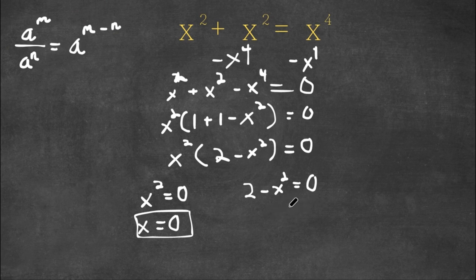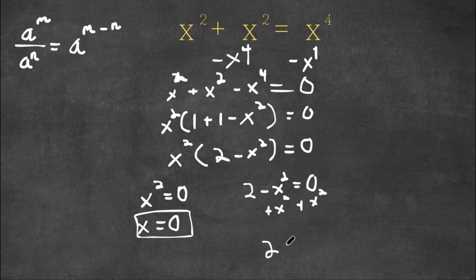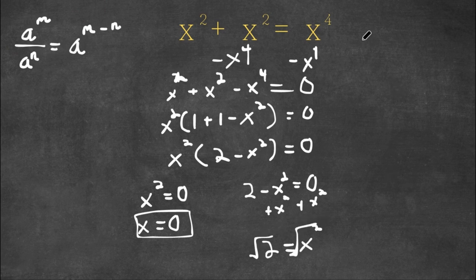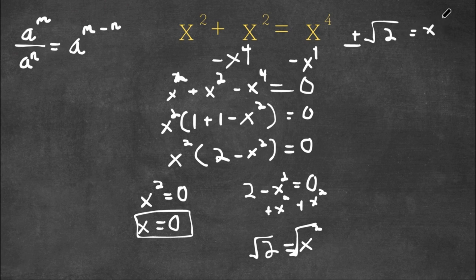Now for the second equation, I'm going to add x squared on both sides. So now we get 2 is equal to x squared. And now if I take the square root on both sides, I get plus or minus the square root of 2 is equal to x. So these are two more solutions to this equation.